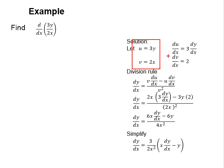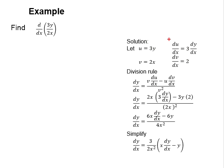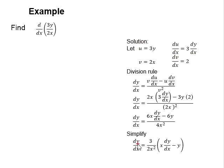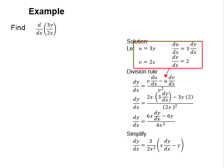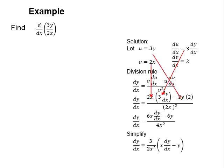Next, you need to differentiate u and v over dx. To differentiate u over dx, there is a function of y. Therefore, while you differentiate it, remember to incorporate dy/dx. Differentiation of this will give you du/dx equals to 3 times dy/dx. Differentiating v over dx, you will obtain dv/dx equals to 2. Use the formula of the division rule and substitute the relevant values: v du/dx minus u dv/dx, divided by v squared.